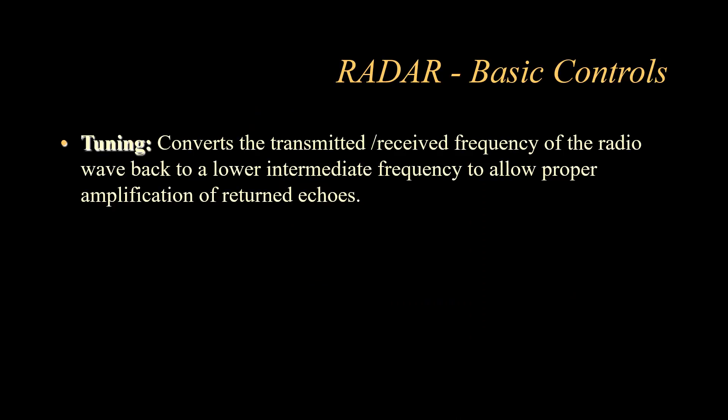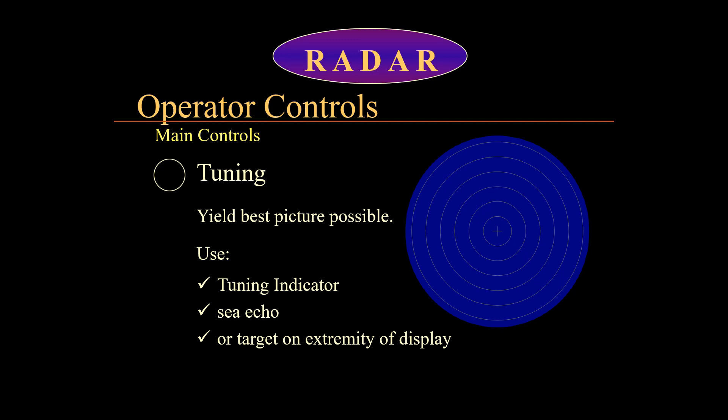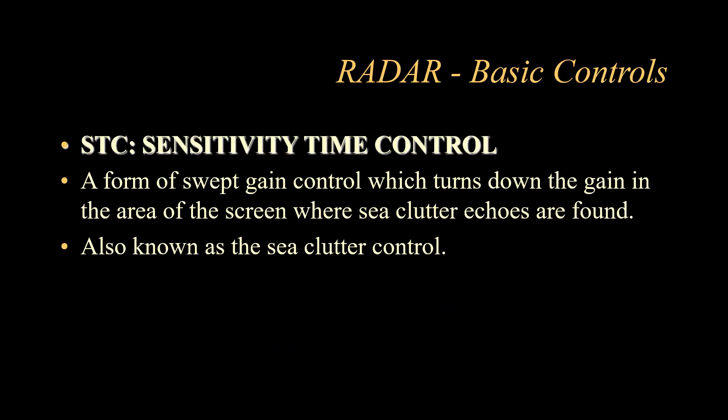The tuning switch converts the transmitted or received frequency of the radio wave to a lower or intermediate frequency to allow identification of returned echoes, producing the best picture possible. The tuning control is also used for fine-tuning, making the picture clearer in terms of shape, size, and detail.